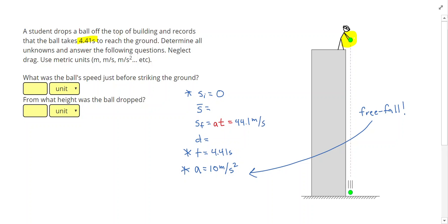Next, I can find the average speed by averaging the initial and final speed. Since the initial speed is zero, I can just cut the final speed in half, which gives me an average speed of 22.05 meters per second, which could also be rounded to 22.1.